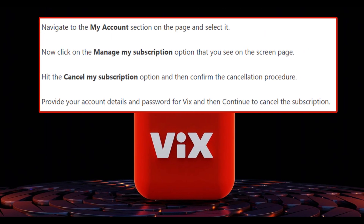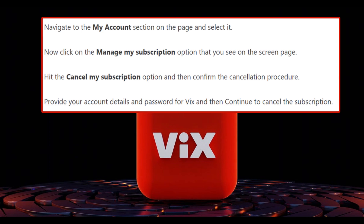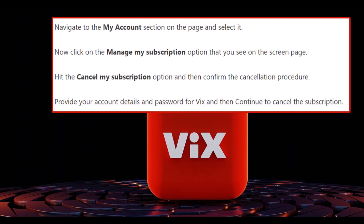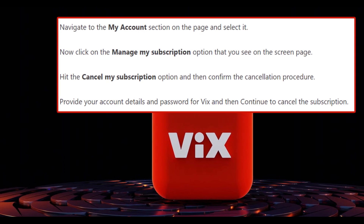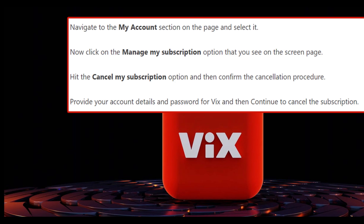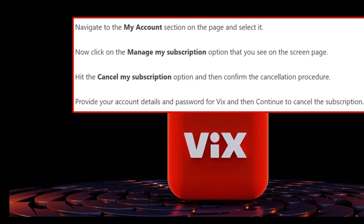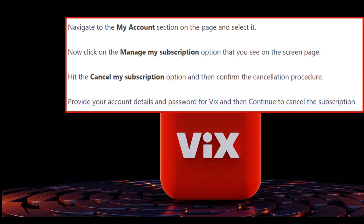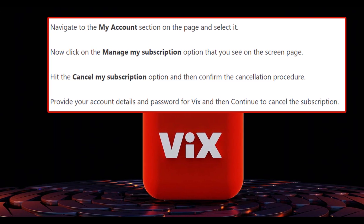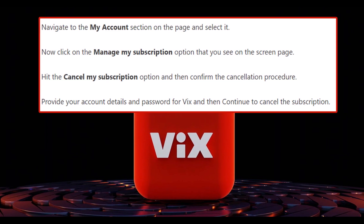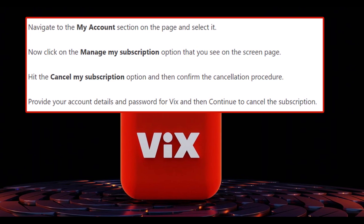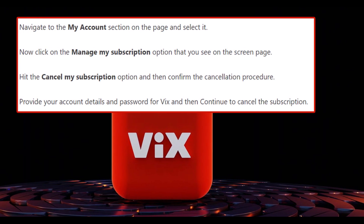Method 1: Cancel VIX online. To cancel the subscription, you will first have to visit the VIX official page and login to your account. Navigate to the My Account section on the page and select it. Now click on the Manage My Subscription option. Hit the Cancel My Subscription option and then confirm the cancellation. Provide your account details and password and then continue to cancel the subscription. And you are done.